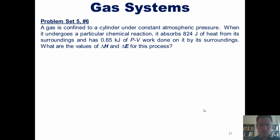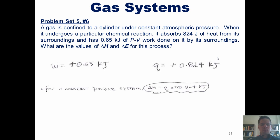Let's go ahead and do this problem together. As shown in the problem, the work done on the system by its surroundings is 0.65 kilojoules, and the heat transferred to the system by its surroundings is 0.824 kilojoules. Note that I've converted 824 joules into 0.824 kilojoules here. So what in the world is the total change in enthalpy, delta H? Well, we learned from one of the equations on the previous slide that for a constant pressure system, delta H equals Q, which equals 0.824 kilojoules. Thus, we've now answered that question.